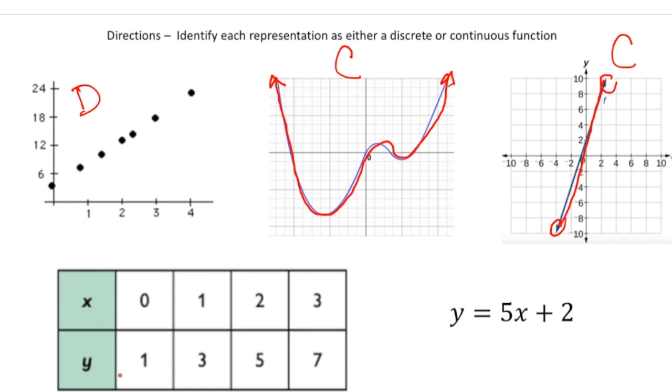This next one has an X and Y table. And notice that there's only four points for X. Again, continuous includes all of the X values, all the real numbers. So this one is going to be discrete. And then last but not least, we have y equals 5x plus 2. And because this is in slope intercept form, we know it's going to be linear. And because it's linear, it's going to go in both directions, continuous. So this is a continuous function.